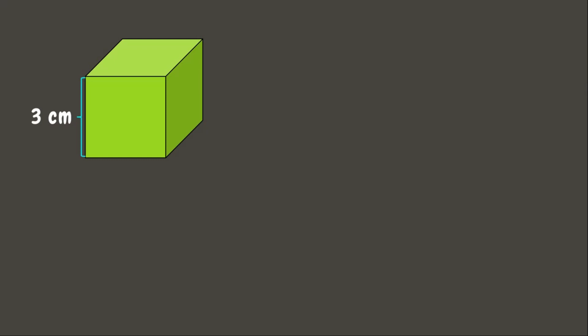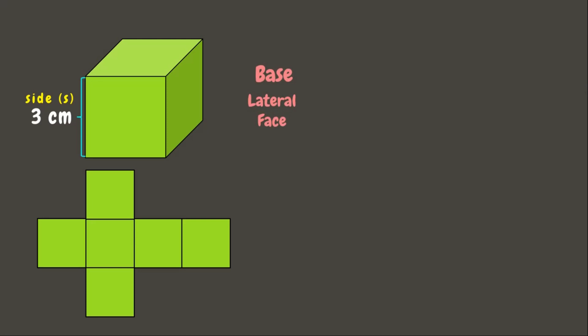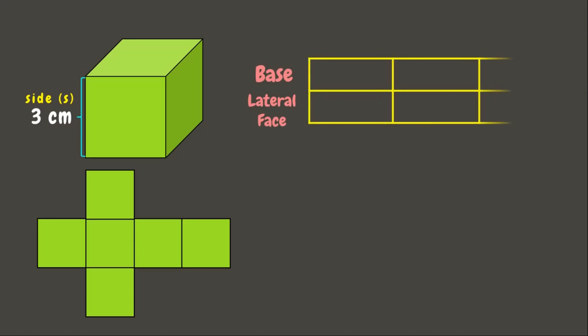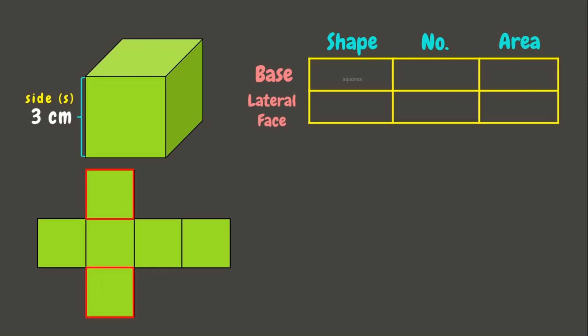Again, we have here a cube whose sides measure 3 centimeters. Let us unfold and get its net. Here we can see that it has two bases, which are in the form of squares. To get the area of a square, we simply multiply side times side, which is s squared.